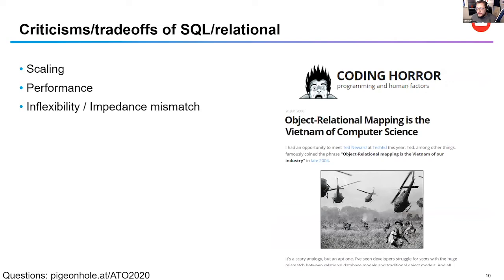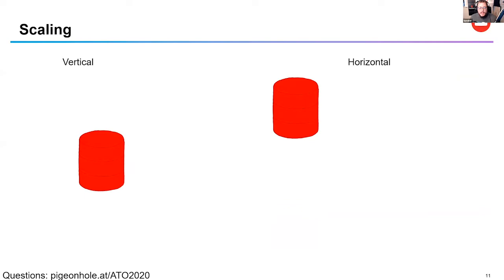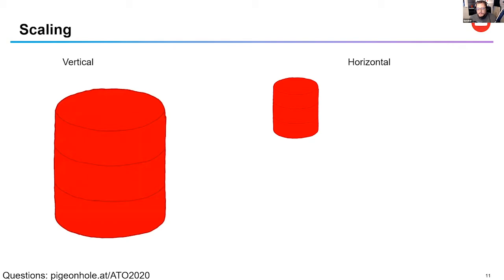Over the years since relational databases dominated the field, there have been criticisms and tradeoffs. One is scaling. There are two types: vertical scaling, where you put the database on a bigger and bigger machine until it gets really expensive or stops helping; and horizontal scaling, where instead of moving to a bigger machine, you add additional machines that coordinate and communicate as part of a cluster.